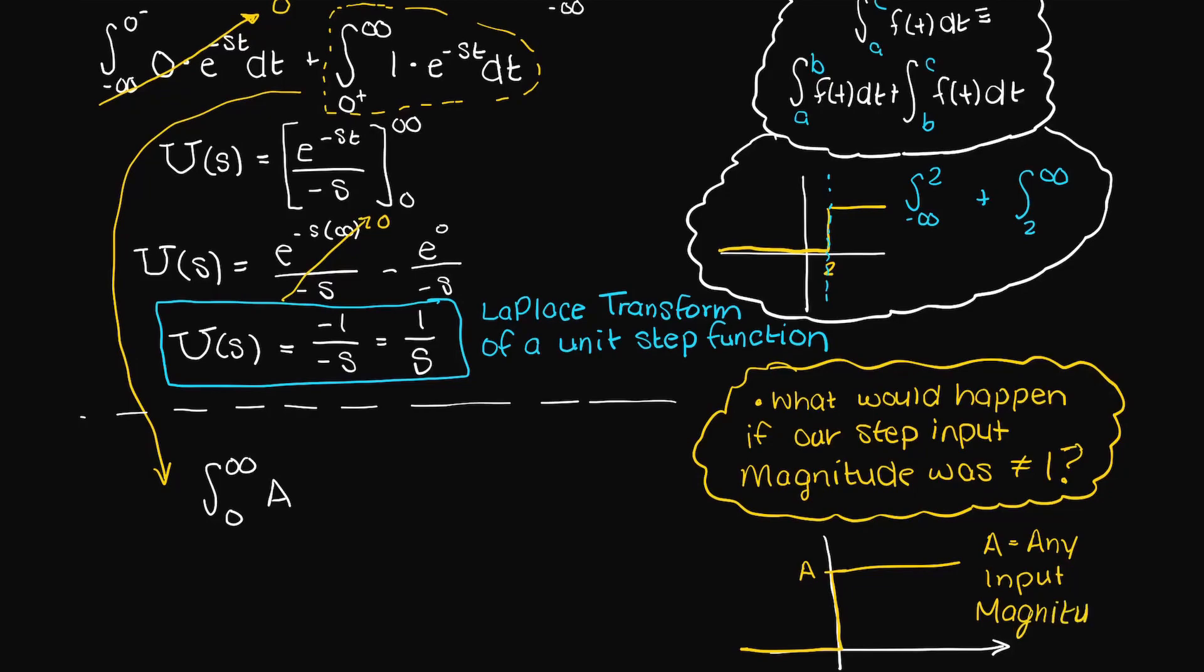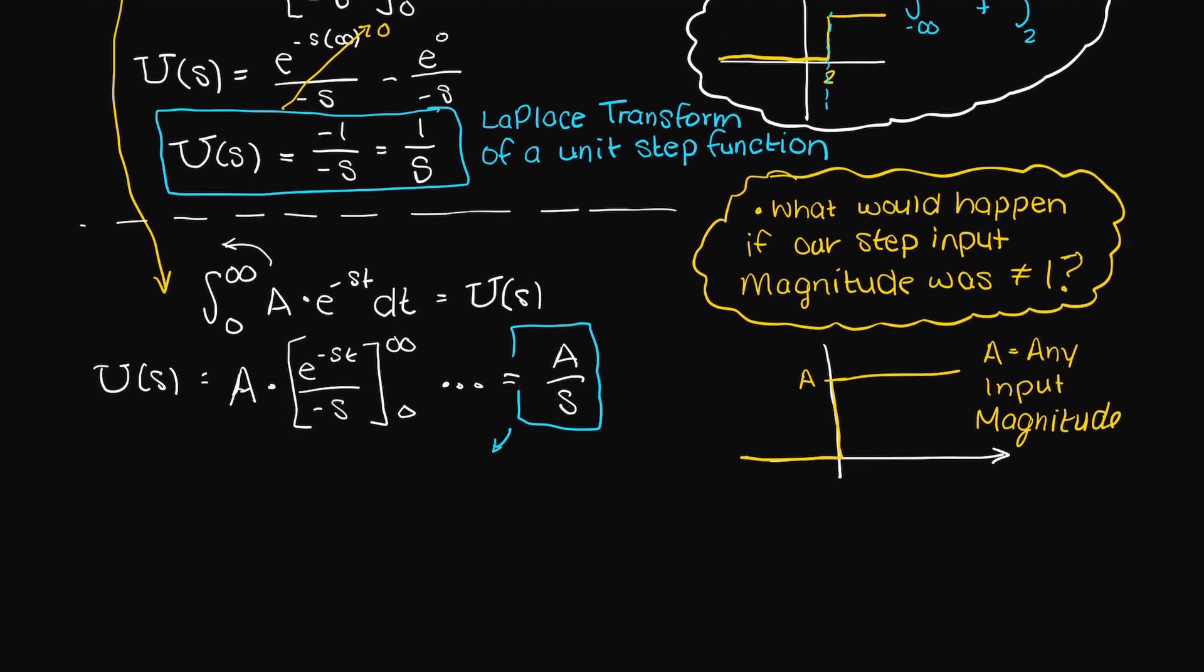Well again the solution is simple. In this step here, you would simply factor out the constant, which is the magnitude of your input, and then you would proceed in the exact same way. So at the end you would end up with A over s and not one over s.